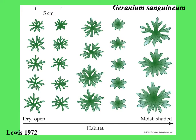Here's a beautiful graphic from a paper by Lewis, who looked at leaf variation in geraniums in a forest. You can see that leaves growing in the dry and open on the left are much more dissected, versus those in moist shaded habitat, which have a lot more lamina per area of the leaf.